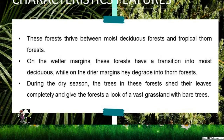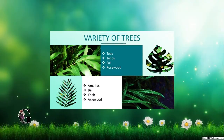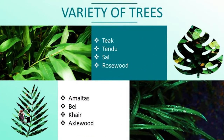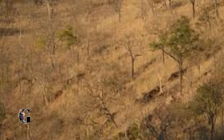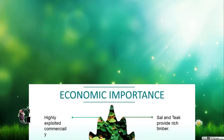Dry deciduous forests thrive between moist deciduous forest and tropical thorn forest. During the dry season, the trees in these forests shed their leaves completely and give the forest the look of a vast grassland with unvarnished trees. Dry deciduous forests have a large variety of trees such as teak, sal, rosewood, and khair.